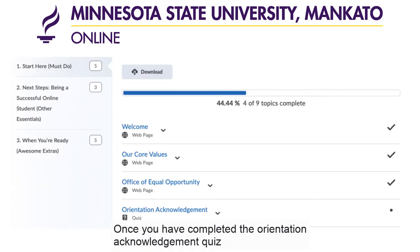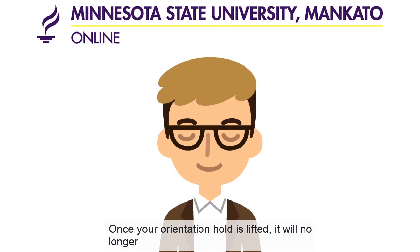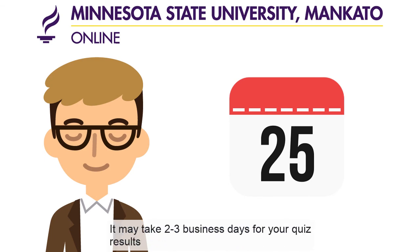Once you have completed the orientation acknowledgement quiz in Module 1, your orientation hold will be lifted. Once your orientation hold is lifted, it will no longer appear in your eServices dashboard. It may take two to three business days for your quiz results to be processed and for your orientation hold to be removed.